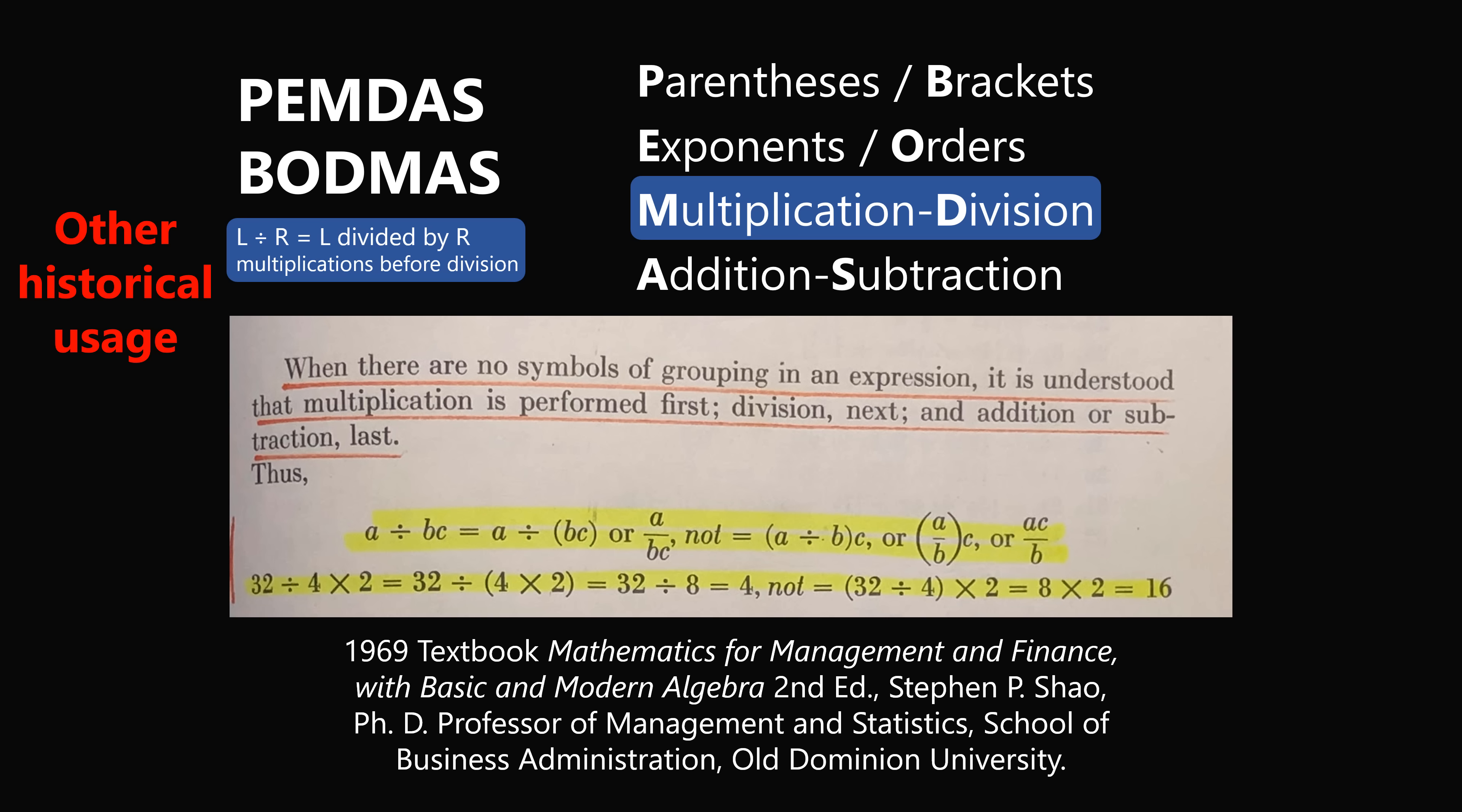When there are no symbols of grouping in an expression, it is understood that multiplication is performed first, division next, and addition or subtraction last. So here we have 32 divided by 4 multiplied by 2. And specifically the author says you need to do 4 multiplied by 2 first to get 8. And then 32 divided by 8 is equal to 4. And they said don't do it the other way. Now this is the first time I've actually seen a printed reference that shows this example. And I'm so grateful to see it.